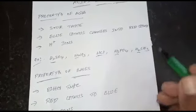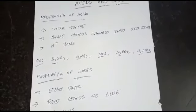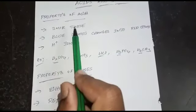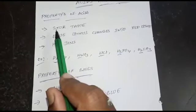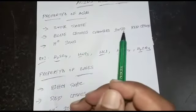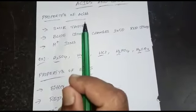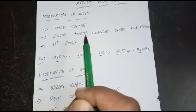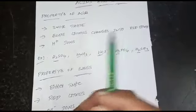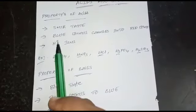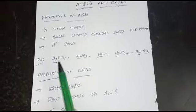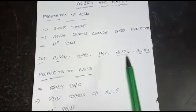These are the properties of acids. First property: sour taste. Second: blue litmus paper, when dipped, changes into red litmus paper. And all acids contain hydrogen. These are the examples for acids.